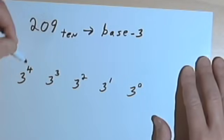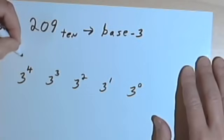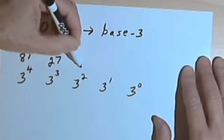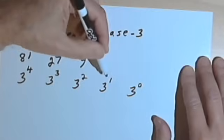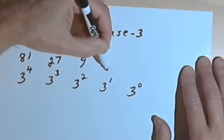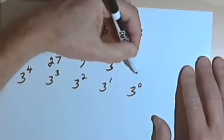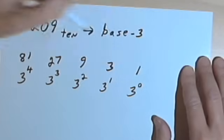Those powers are: 3 to the 4th is 81, 3 to the 3rd is 27, 3 squared is 9, 3 to the 1st is 3, and 3 to the 0 is 1.